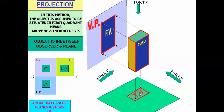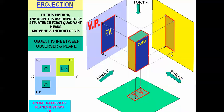For the side view, the dark-colored portion visible from the side is projected onto what is called the profile plane or auxiliary plane. In place of a 3D object, we have point Q at a height of 40 mm from the horizontal plane and 30 mm from the vertical plane, and we need to calculate its shortest distance.